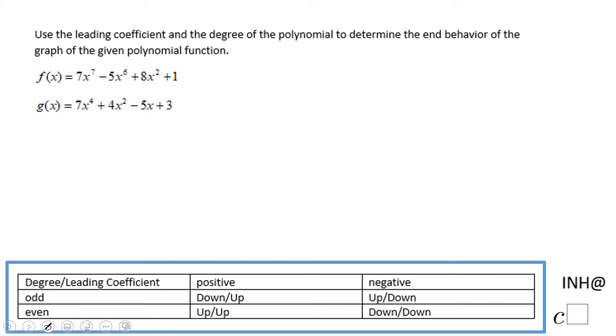Welcome or welcome back to I Need Help at C Squared. In this example we have two polynomial functions, f(x) and g(x), and we need to use the leading coefficient test, which you see down here, to determine the end behavior of the graph of the given polynomial function. So what do we need to do here?